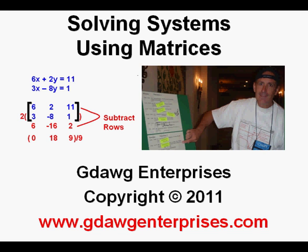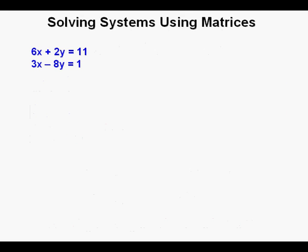Solving systems using matrices. One of my students recently asked me to show him how to solve systems of equations using matrices. And this is the system he gave me, the equation 6x plus 2y equals 11 and 3x minus 8y equals 1.